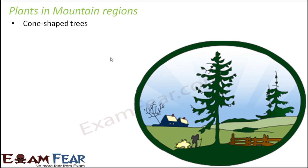We mostly see cone-shaped trees in mountain regions. If you have ever closely observed, the trees are shaped like a cone. The pine trees, for example, which you see in hilly areas — why are these trees shaped like a cone? That's because the leaves are slanted in such a way, with needle-shaped leaves, so that when there is a lot of snowfall or rainfall, the water can flow down through the slopes of the leaves. That shape helps these trees to allow rain water and snow to slide off very easily.